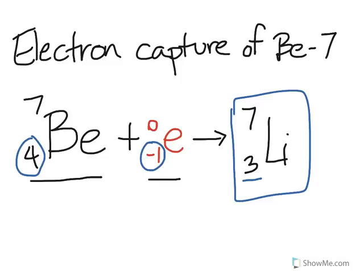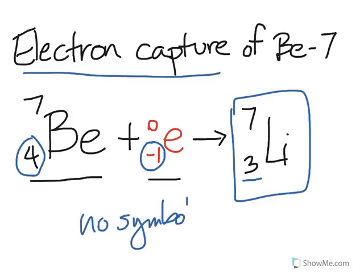Note that there is no symbol for electron capture. It's more like a fusion reaction—you combine two things instead of having one atom or isotope decay into smaller components.